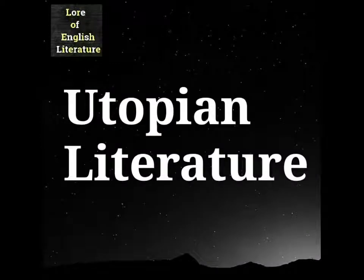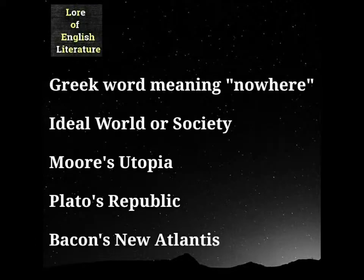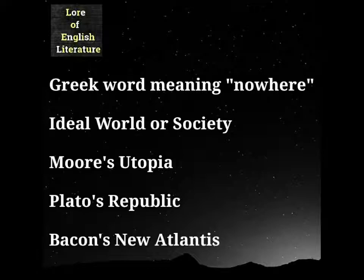Assalamu alaikum friends and welcome to Lore of English Literature YouTube channel. Today we will discuss utopian literature. Utopia is derived from a Greek word which means 'nowhere.' Utopian literature is a kind of literature in which an ideal society is depicted.